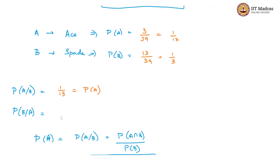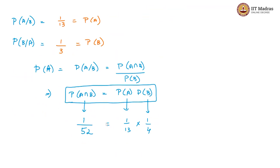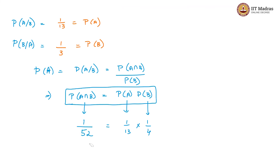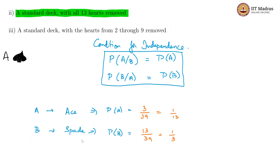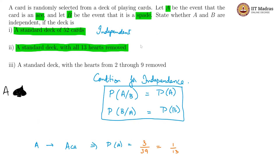And what is P of B given A? There are only 3 aces now, and how many of them would be a spade? Only 1. So this is 1 by 3, which is equal to P of B, and again our condition is satisfied. P of A intersection B is 1 by 39 — there is 1 ace of spades in the 39 cards. P of A is 1 by 13 and P of B is 1 by 3, and 1 by 13 times 1 by 3 is 1 by 39. So the condition is satisfied, and in the second case also, these two events are independent.